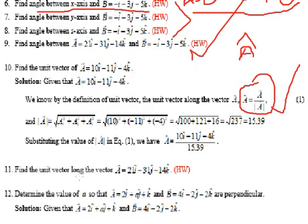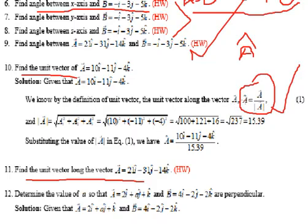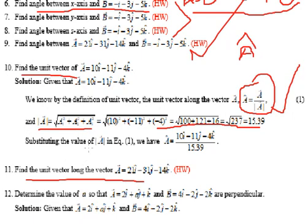Find the unit vector of A and find the unit vector along the vector A. A is a unit vector. A vector is a unit vector. A value is 10i minus 11j minus 4k, which is 15.39. This is the variable unit vector.